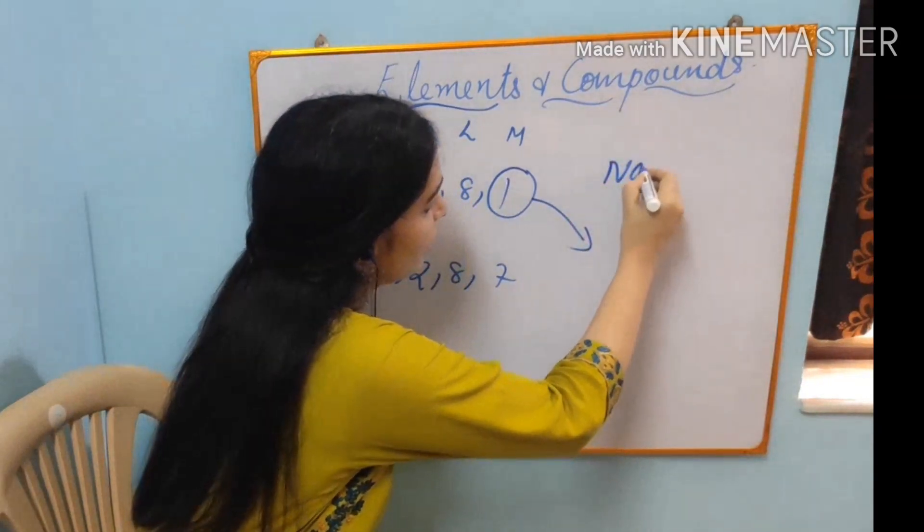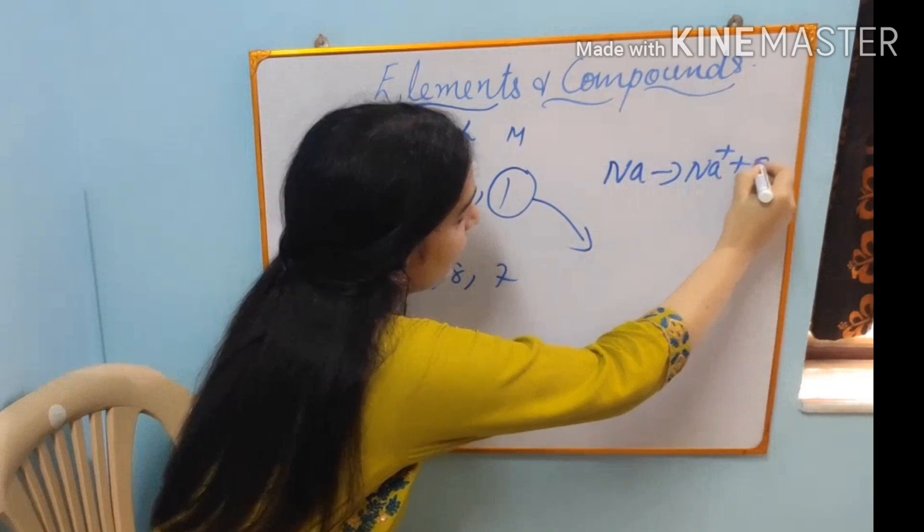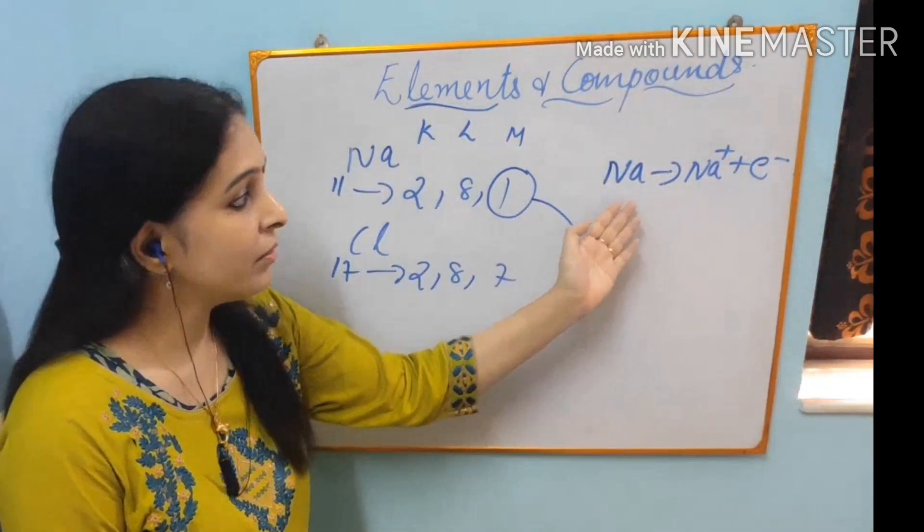Its outermost shell will become L and its octet is already completed. So sodium will give out 1 electron to become Na+. In the last class, I told sodium is a metal. They are givers.